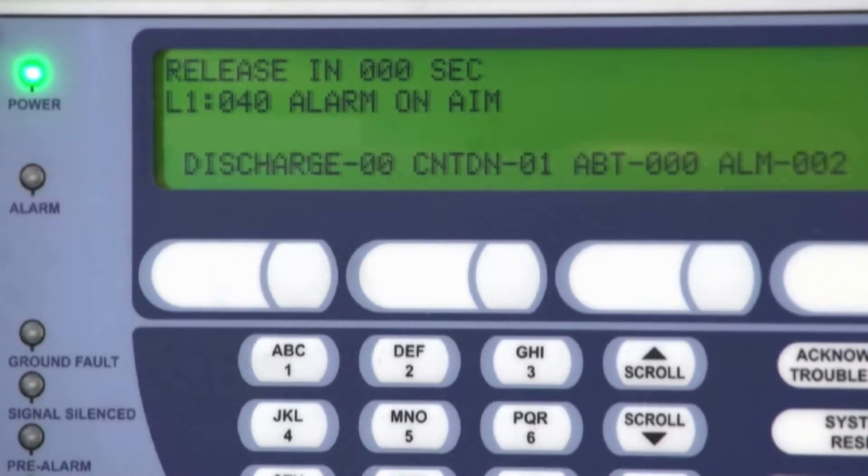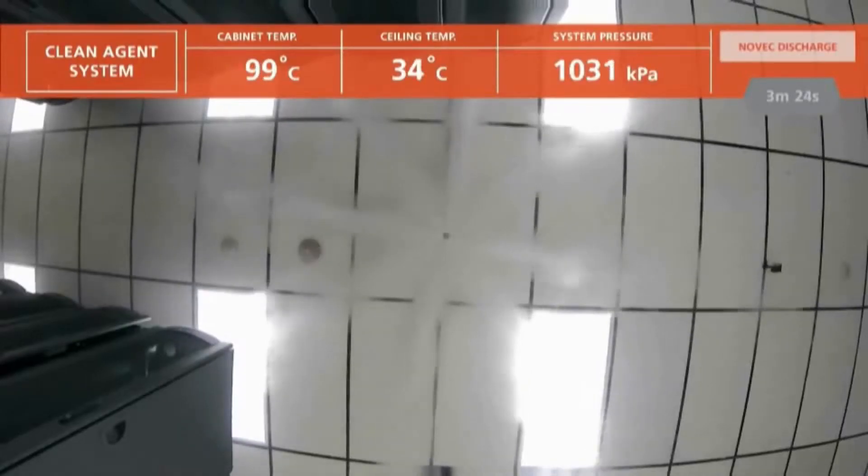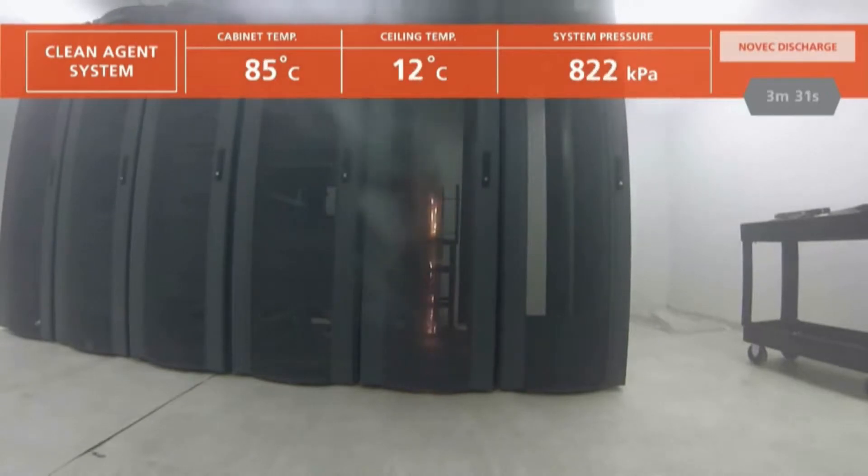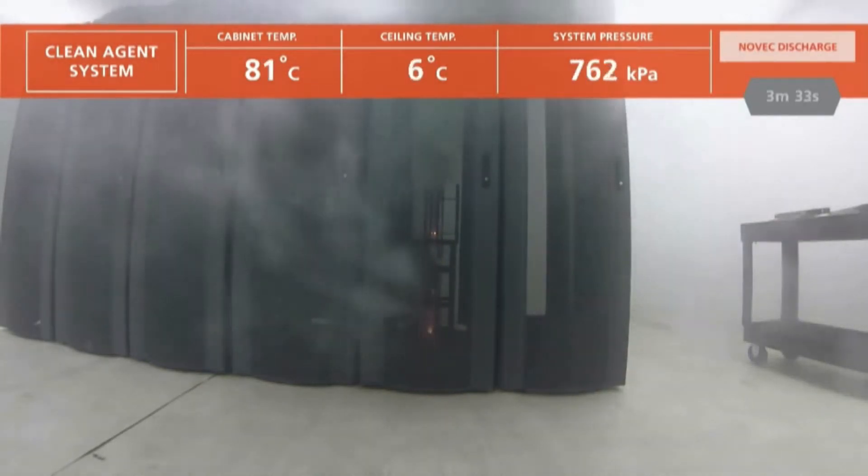And then, discharge. The NOVEC 1230 suppression agent floods the room and penetrates the burning enclosure where it extinguishes the fire in less than 20 seconds.